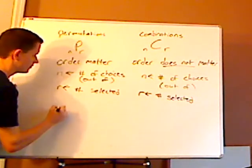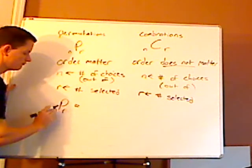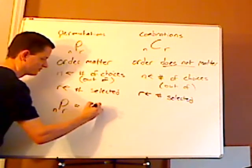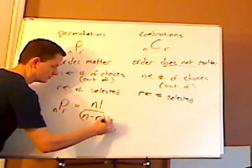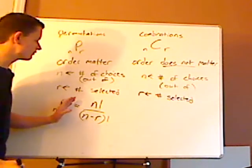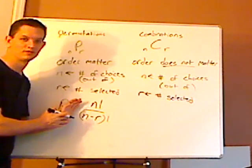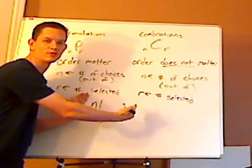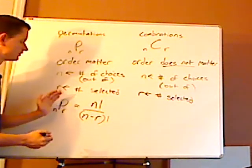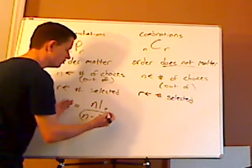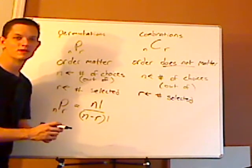So the formula for NPR, N factorial over N minus R factorial. And you just basically plug in the numbers, and what's going to happen is things are going to cancel out. So you don't just have to write the entire factorial, just enough so that you can see the pattern and start crossing things off. And you should always get a whole number. It should never be negative, and it should never be a fraction.